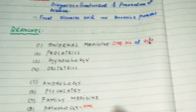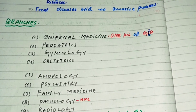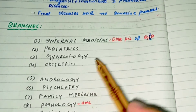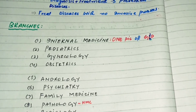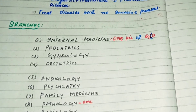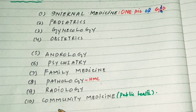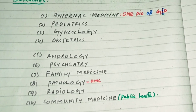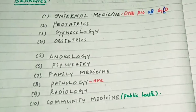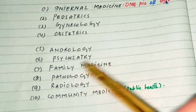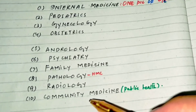Community medicine is the branch of medicine in which we study the delivery of comprehensive healthcare to the community. The community is also involved in preventing disease and preventing health problems. This covers all about medicine and the branches of medicine.